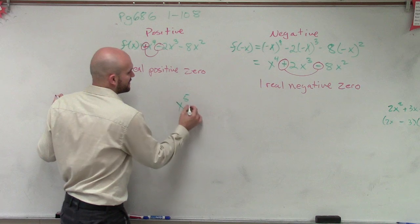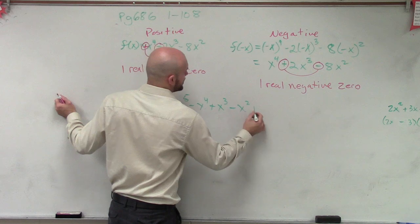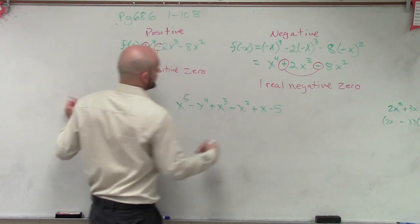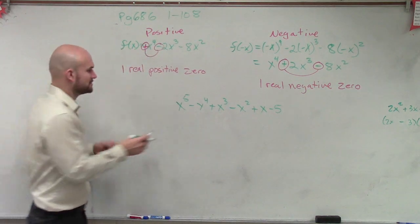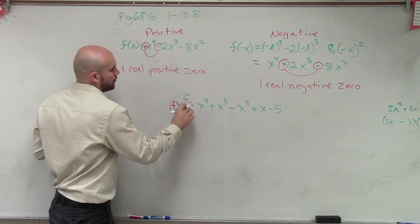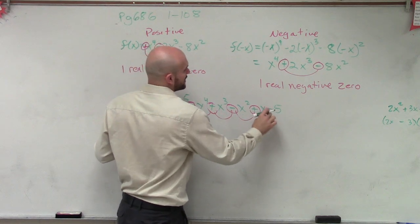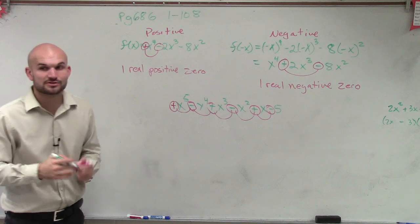Let's say I had x to the fifth minus x to the fourth plus x cubed minus x squared plus x minus 5, whatever. You guys would notice that this has one variation, two variations, three variations, four variations, and five variations.